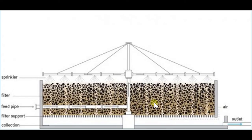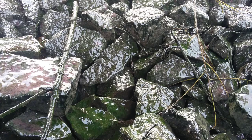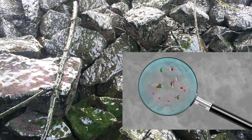Generally, rock and gravel are the most commonly used media. When wastewater is distributed and percolates down through the trickling filter, an organic layer is left on the surface of the media. This organic layer is called a slime layer.